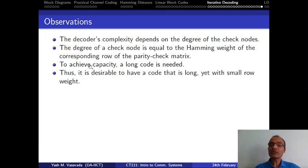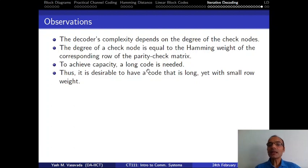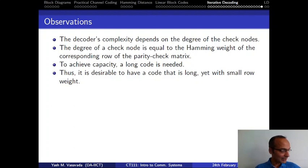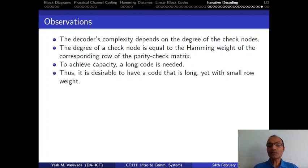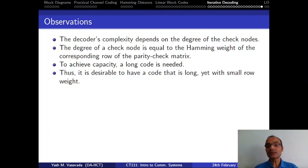To improve the performance of a coding scheme, it is known that we need to make the coding length N to be large. Typically, when you make N large, the decoding complexity increases — as we saw in the context of syndrome decoding or standard array decoding, the decoding complexity exponentially increases. For example, the memory requirement is 2 to the power N, making those decoding schemes simply not practical when N becomes large.